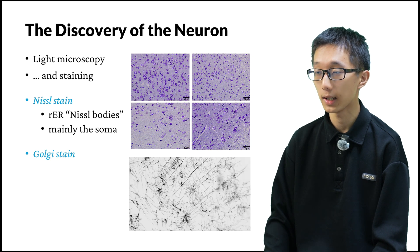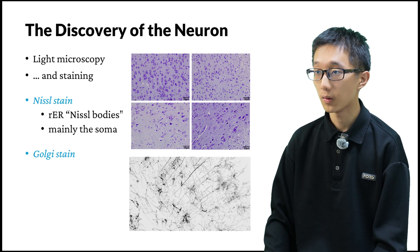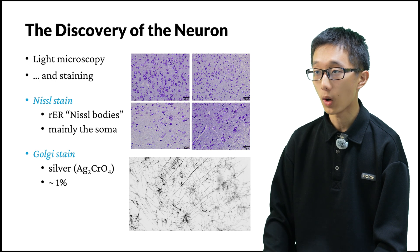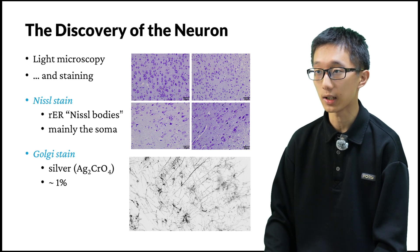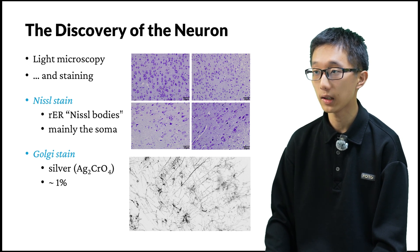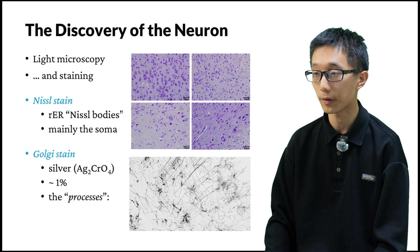Another important stain is the Golgi stain, which is much finer. The Golgi stain uses silver — specifically, it relies on the formation of silver chromate deposits inside neurons. Intriguingly, the Golgi stain only stains around 1% of all the neurons. It might seem a disadvantage, but it is in fact the exact advantage: if we stained all the neurons black, the whole brain would be a black mess. When only 1% are stained, we can see individual neurons with extreme clarity. The Golgi stain stains the processes of the neurons — not only the soma, but also the thin little filaments that extend from the soma.